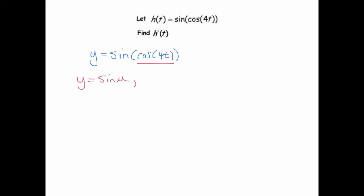So u is the cosine of something - it's the cosine of 4t. So I'm gonna call that 4t another variable w. And then I'm going to say what w is - w is just 4t.